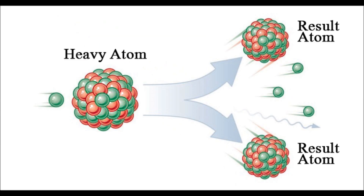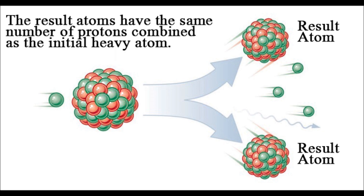Nuclear fission is a process during which a heavy atom is broken into two smaller atoms by a neutron fired at it. When the neutron hits the heavy atom, the atom splits into two other atoms which have the same number of protons combined as the first atom, but they don't have the same number of neutrons.